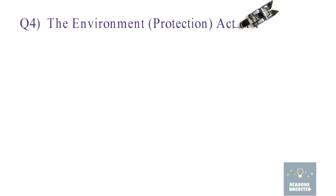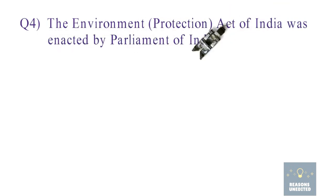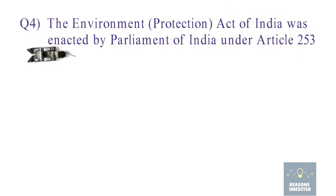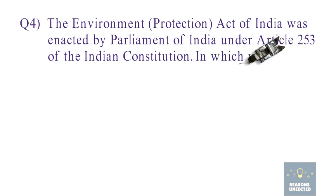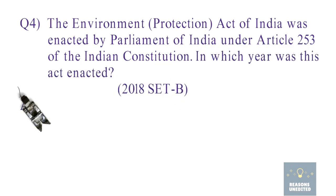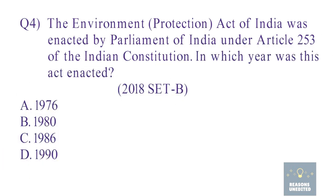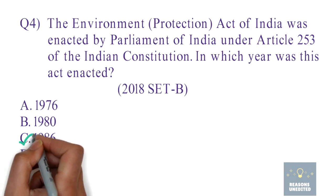Question 4. The Environment Protection Act of India was enacted by Parliament of India under Article 253 of the Indian Constitution. In which year was this Act enacted? Option A: 1976. Option B: 1980. Option C: 1986. Option D: 1990. The correct option is Option C, 1986.